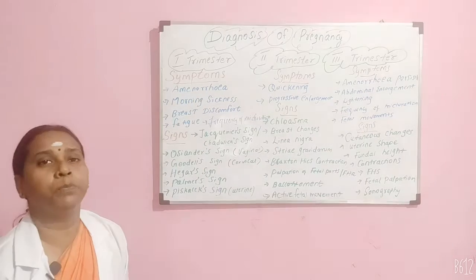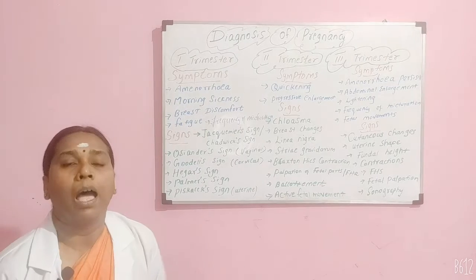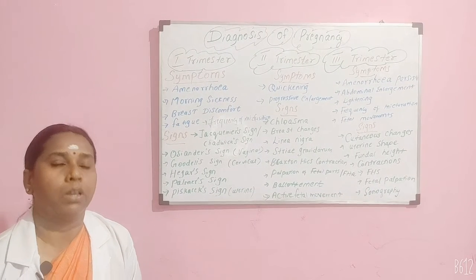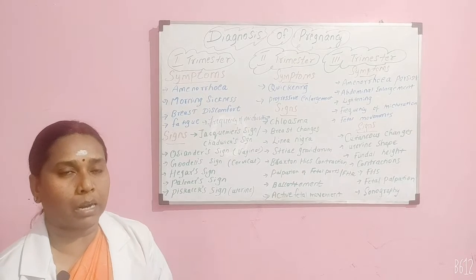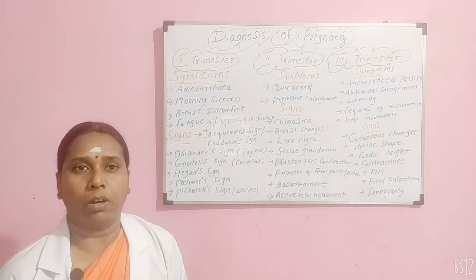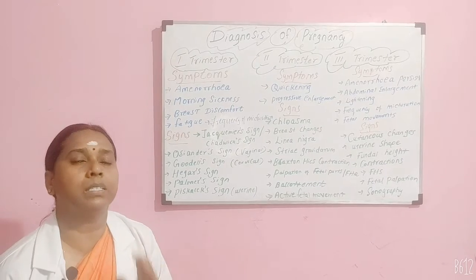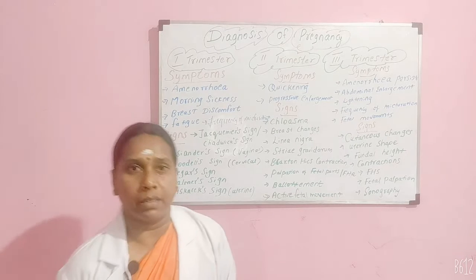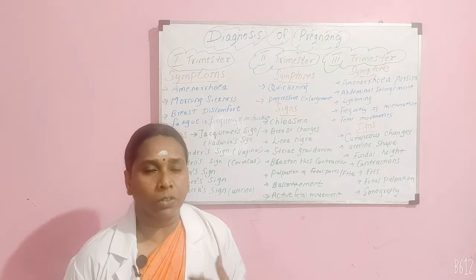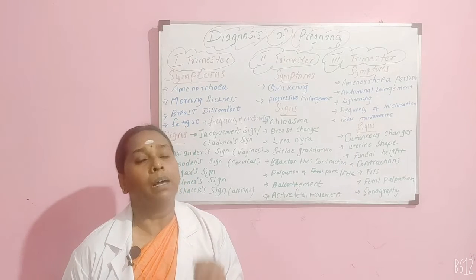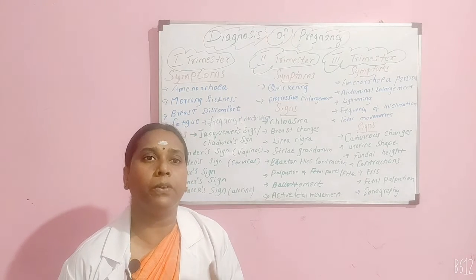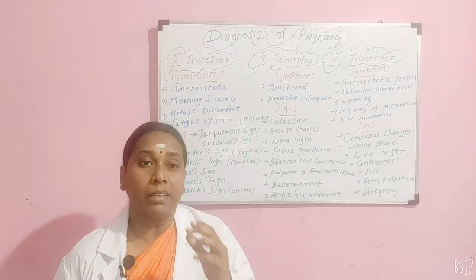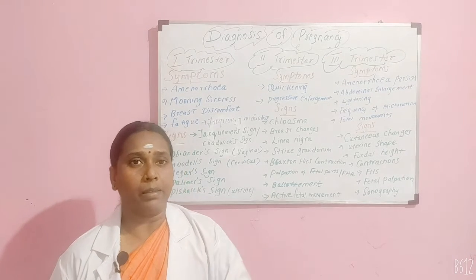The first symptom during the first trimester is amenorrhea — the absence of menstruation. When pregnancy begins, the woman will not get her menstrual cycle. The second symptom is morning sickness, which is the feeling of nausea and vomiting. Some people will have only nausea, while others will have actual vomiting — either can happen.